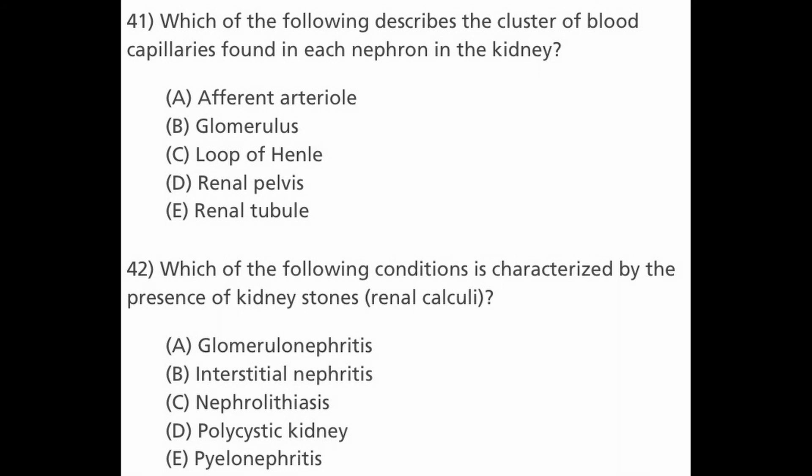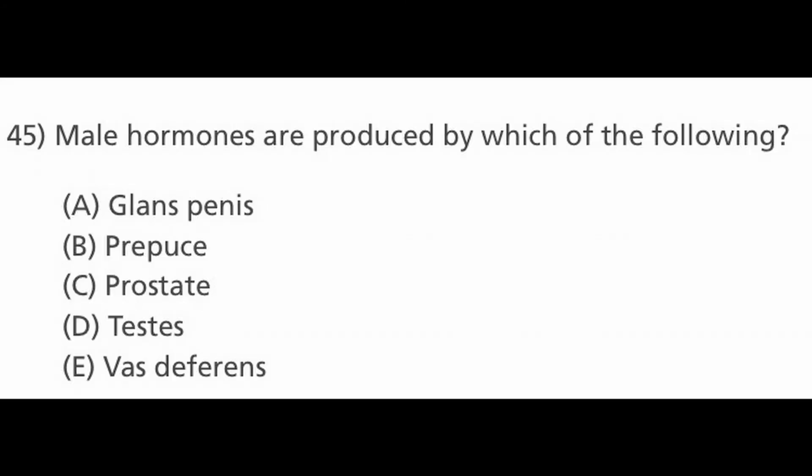Next question: male hormones are produced by which of the following? Options are A. Glans penis, B. Prepuce, C. Prostate, D. Testes, and E. Vas deferens. The answer is D, testes. The male hormones are produced by the testes.